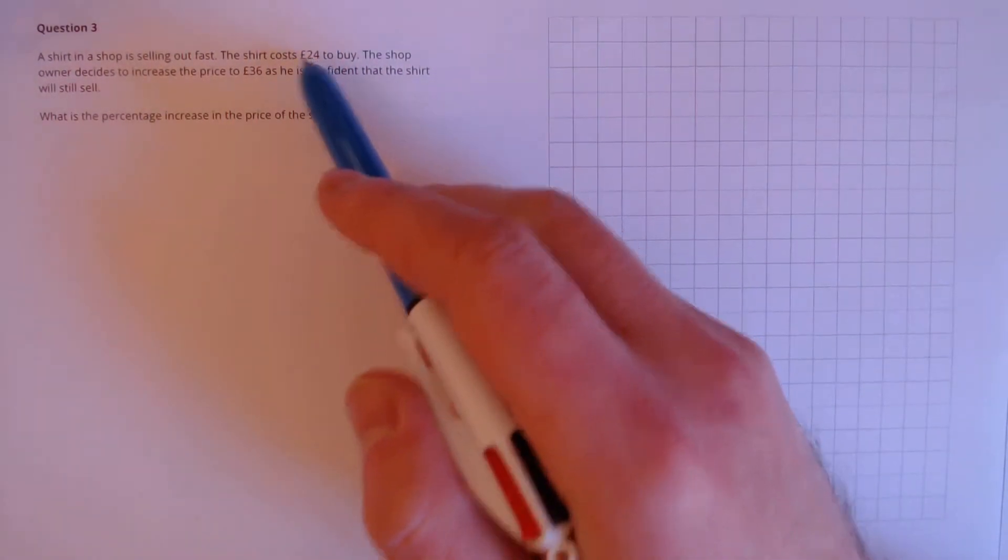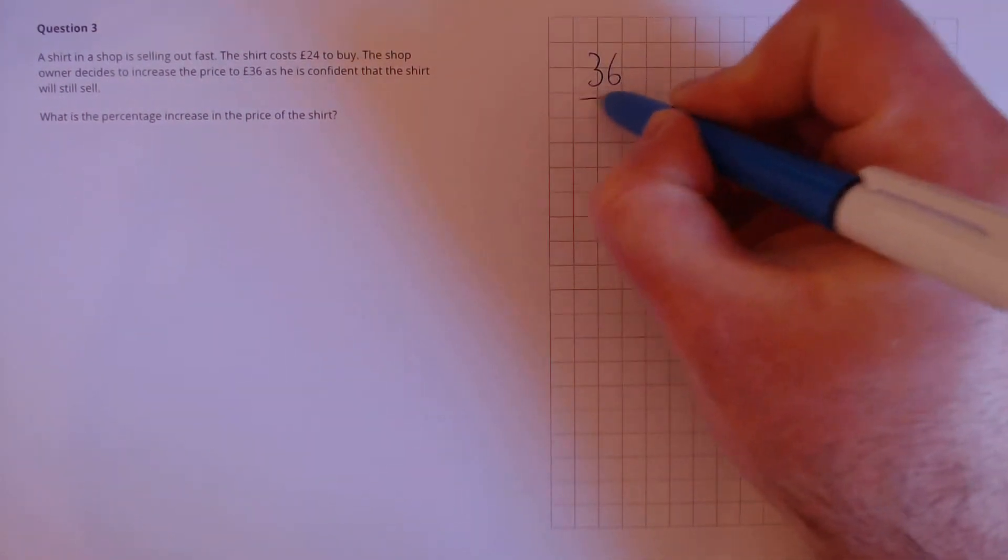To calculate the percentage increase we need to find out the multiplier. That's the number that 24 is multiplied by to make 36. To do that we divide 36 by 24.